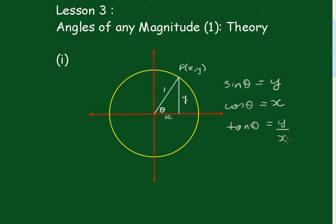Now we'll proceed to go around each of the quadrants. This one is called the first quadrant — Quadrant 1. This is the second quadrant going in this direction — Quadrant 2. This one is Quadrant 3, and this one is Quadrant 4.